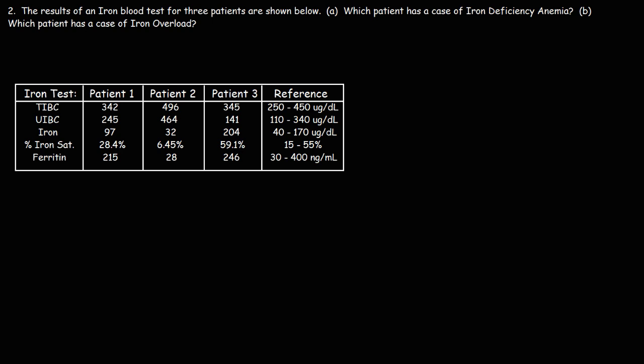So let's analyze each patient, starting with patient 1. Patient 1's TIBC level is 342, so that's within range. I'm going to write N for normal. His UIBC level, 245, is also in range. His iron levels are good. And percent iron saturation is also normal. His ferritin levels, this is an intracellular iron storage protein, that's also normal.